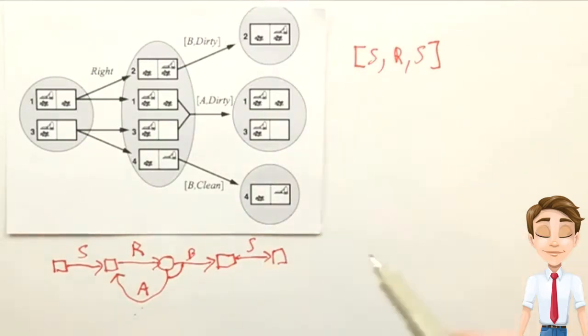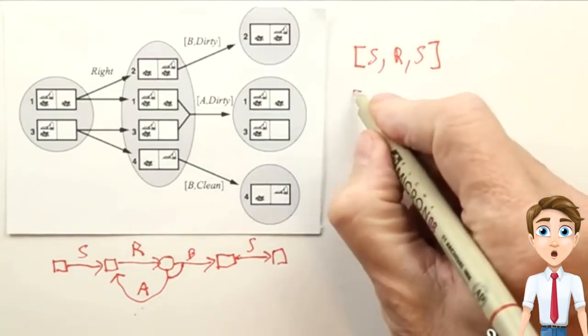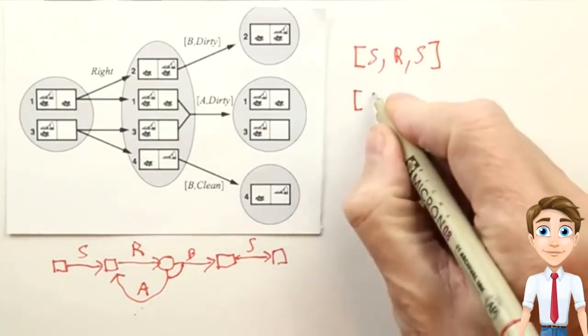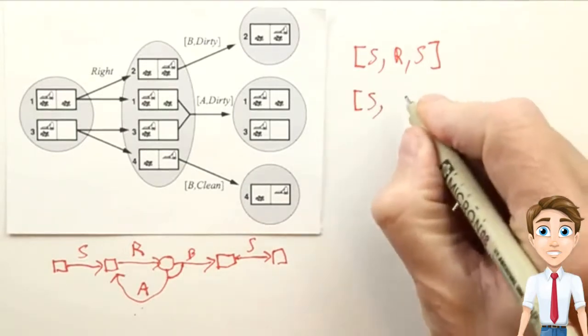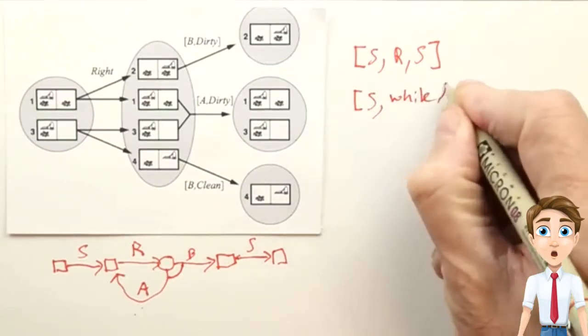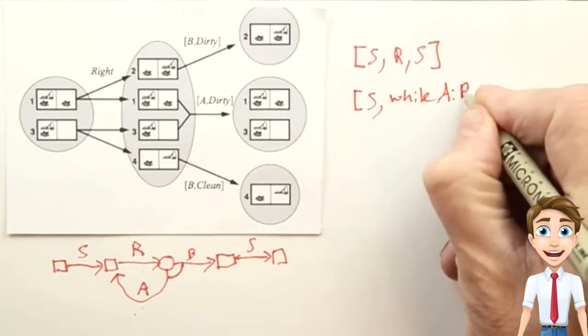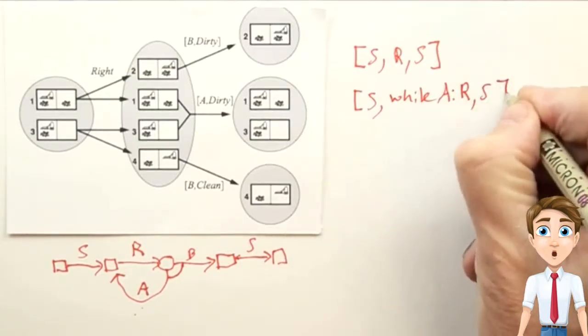And we could write it in a more linear notation as S, while we observe A, do R, and then do S.